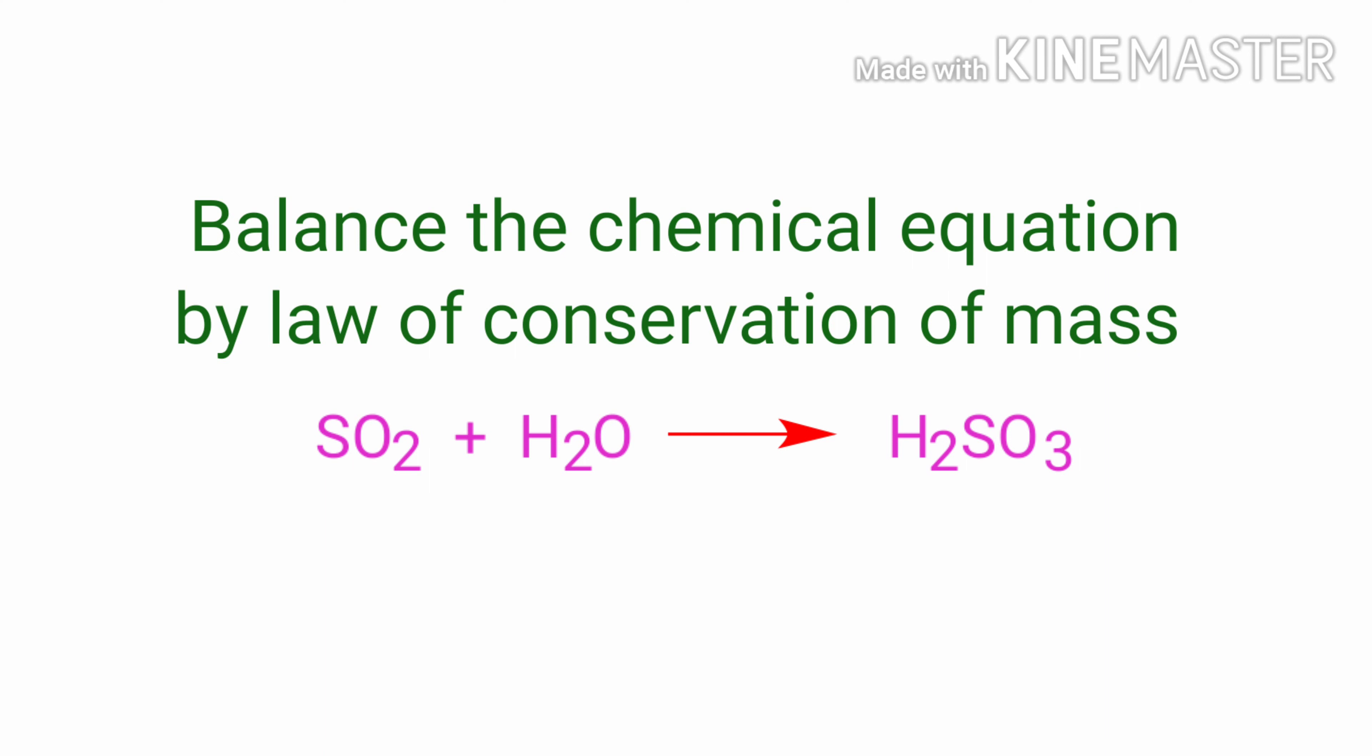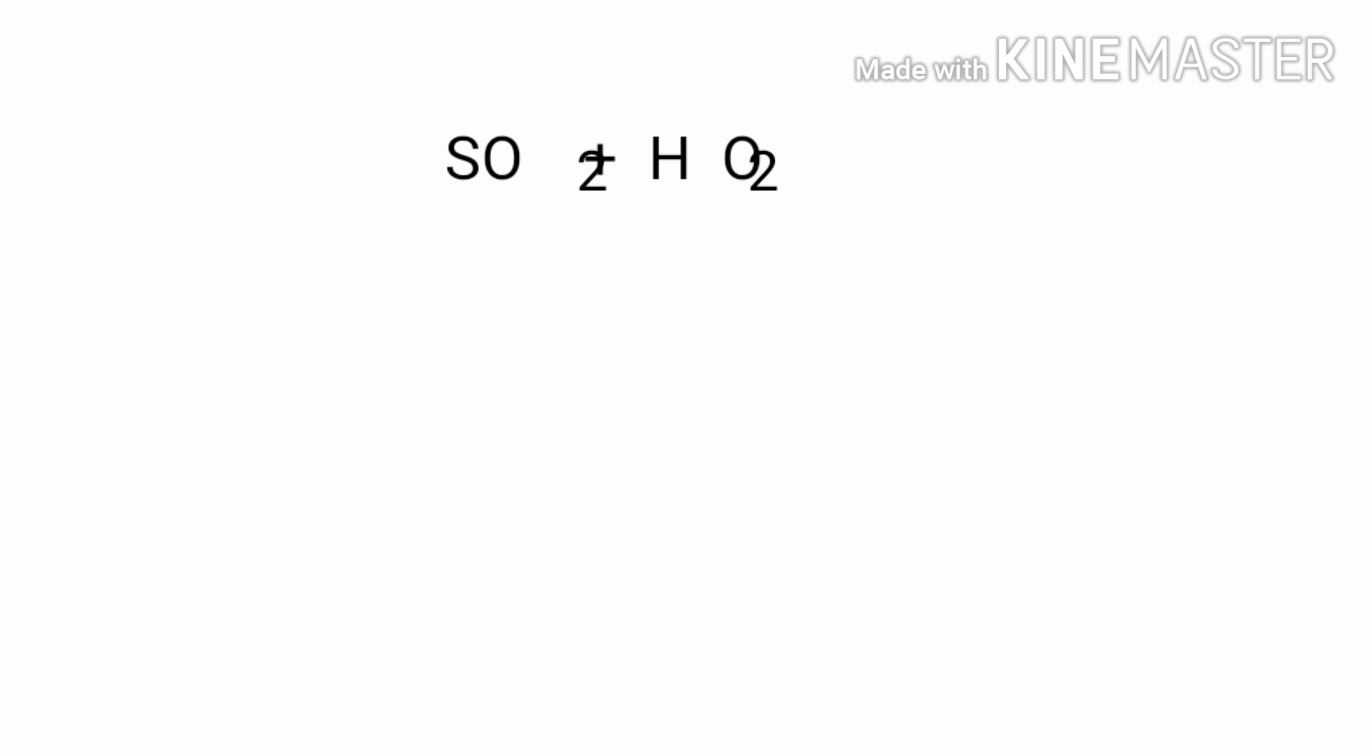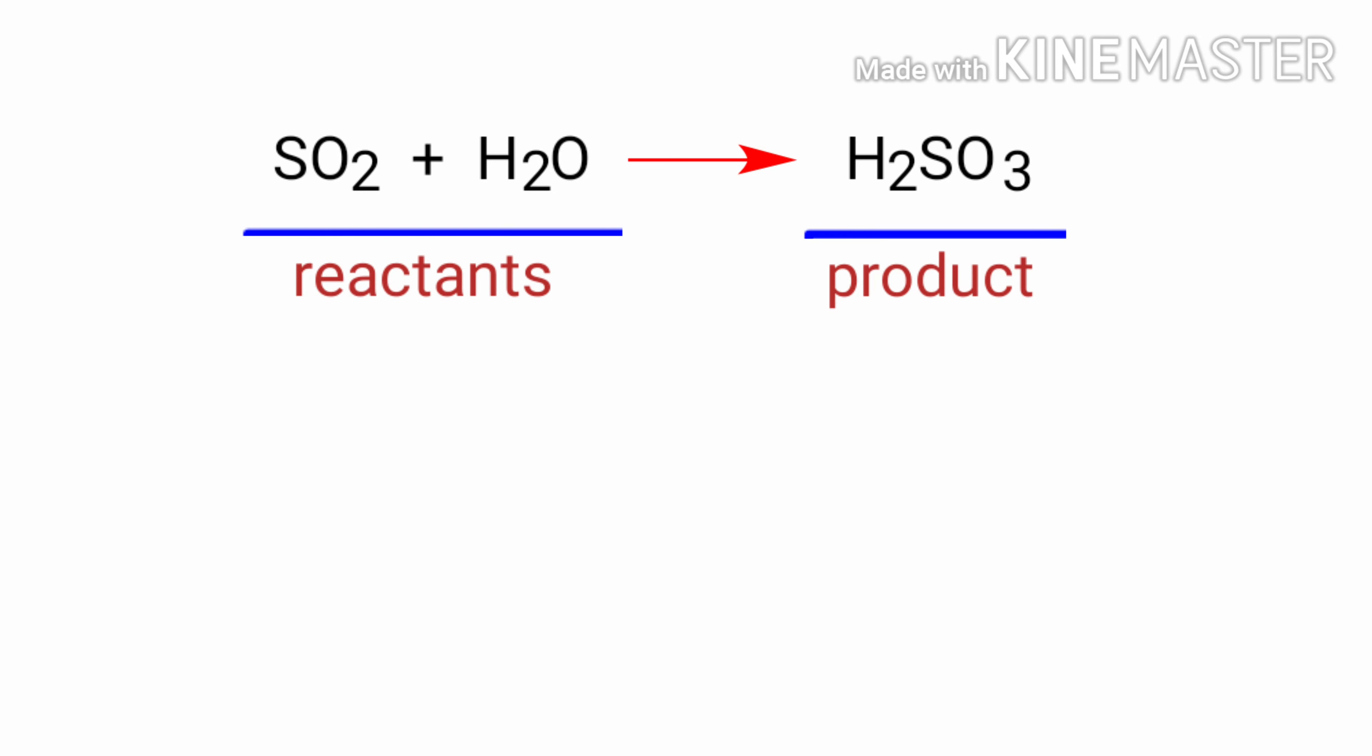Sulfur dioxide plus water gives us sulfurous acid. In this equation, the reactants are sulfur dioxide and water, and the product is sulfurous acid.